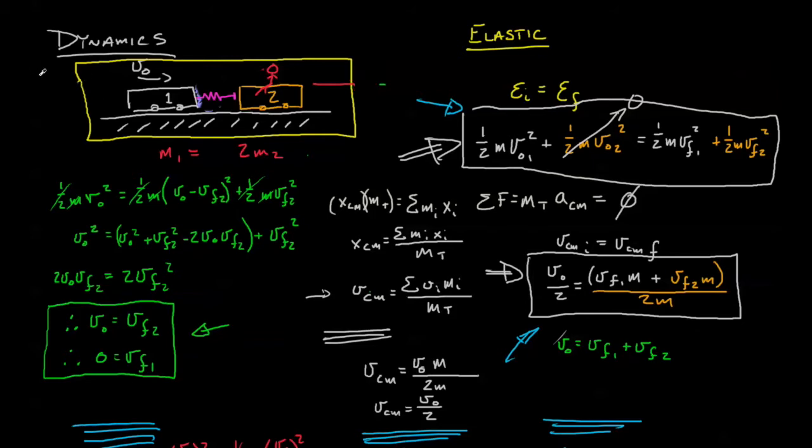Now let's contrast that with what happens if it's a fully plastic collision. You see Cart 1 coming towards you at v-naught and then you collide and you're going down the track but now you're stuck together. So the relative velocity between the two of you is zero.